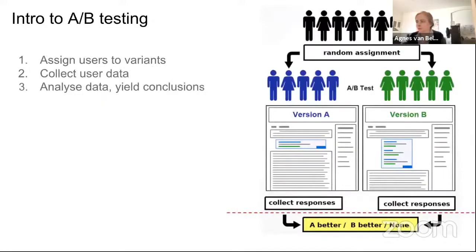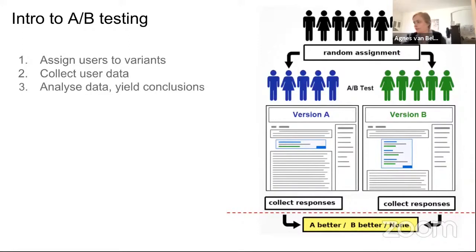A brief recap of what A/B testing actually is: you have some platform or website and a bunch of users. You want to add some feature and see how people react to it. You assign users to two variants — version A, which is the current state of your platform, and version B, which has the new feature. Then you collect user data from both groups and analyze it to determine which variant is better.